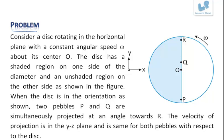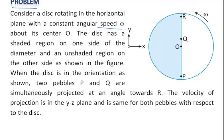Now the next problem is consider a disk rotating in the horizontal plane with a constant angular speed omega about its center O. The disk has a shaded region on one side of the diameter and an unshaded region on the other side as shown in the figure.